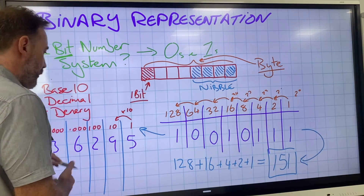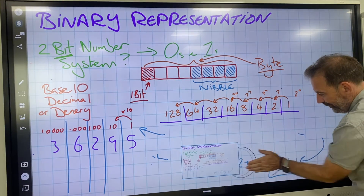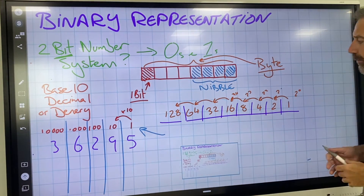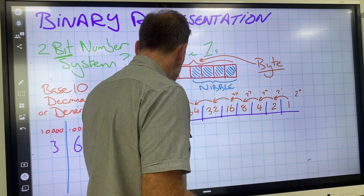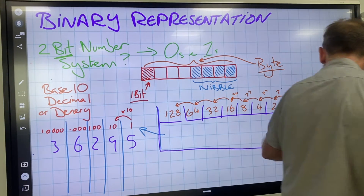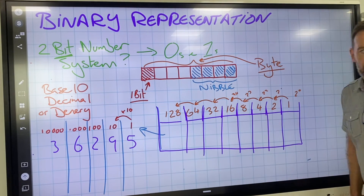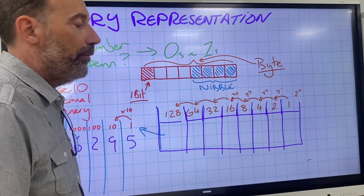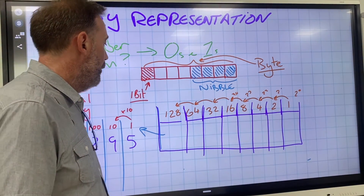What do you think the maximum number we could hold in an 8-bit binary register? We've got 8 places. What's the maximum number? Think about it — all 1s at once. 1, 2, 3, 4, 5, 6, 7, 8 equals... I'll give you a clue. What's the next number? It's 256.